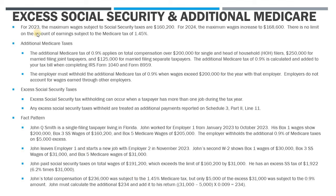Starting with the Social Security issue: for 2023, the maximum amount of wages subject to Social Security tax is $160,200. For 2024, the maximum wages increased to $168,600. And as always, there is no limit on the amount of earnings subject to the Medicare tax of 1.45%. So Social Security taxes are 6.2% on wages up to that ceiling, and Medicare taxes of 1.45% apply to all wages — all of your Medicare wages.